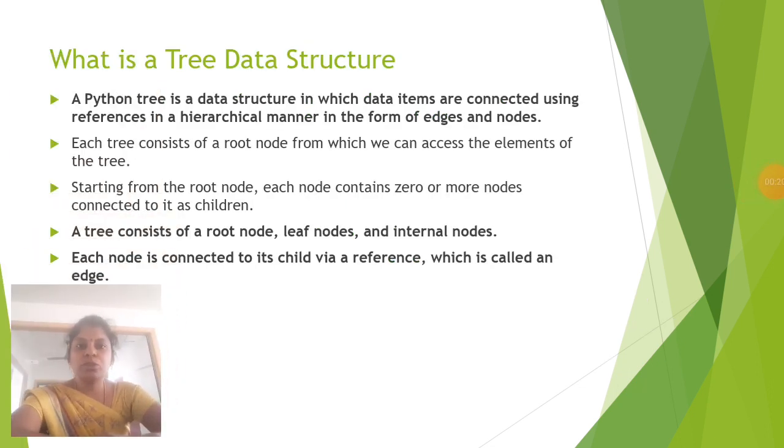First we are going to see about what is tree data structure. A Python tree is a data structure in which data items are connected using references in hierarchical manner in the form of edges and nodes. Each tree consists of root node from which we can access the elements of the tree. Starting from the root node, each node contains zero or more nodes connected to it as children. A tree consists of a root node, leaf node and internal nodes. Each node is connected to its child via reference which is called an edge.